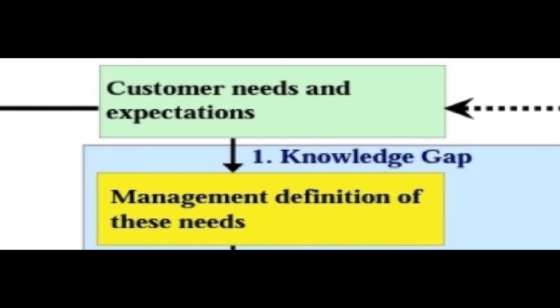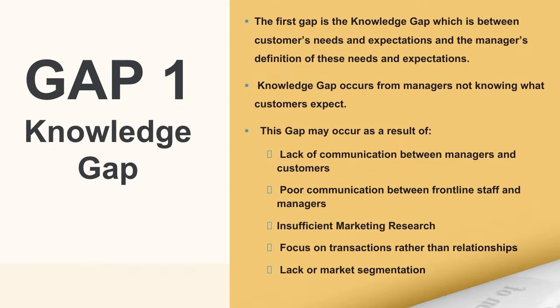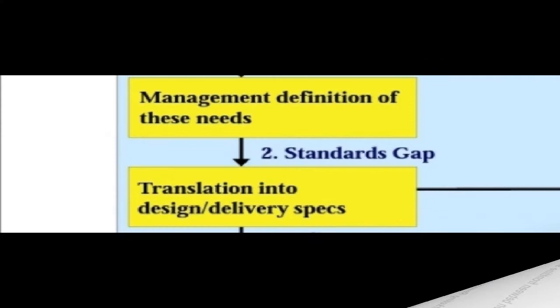We will now look at each gap individually. Gap number one is the knowledge gap — the difference between the customer's needs and expectations and the manager's definition of those needs and expectations. This gap occurs from managers not knowing what customers expect, resulting from lack of communication between managers and customers, poor communication between frontline staff and managers, insufficient marketing research, focusing on transactions rather than relationships, and lack of market segmentation.